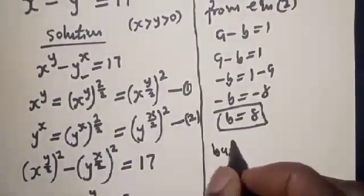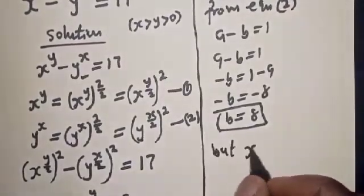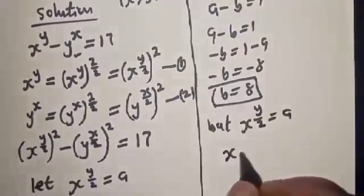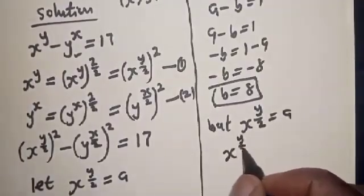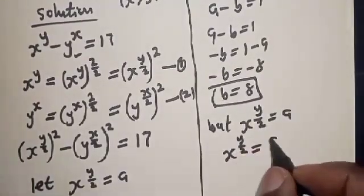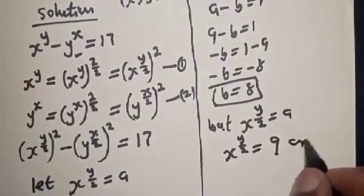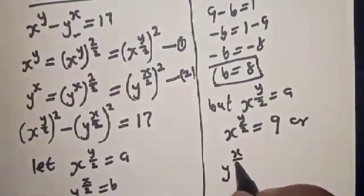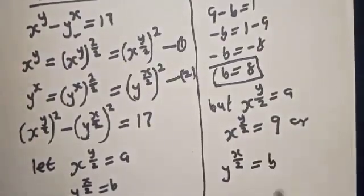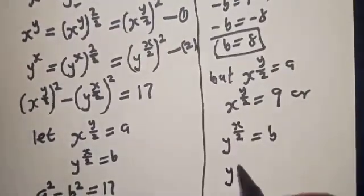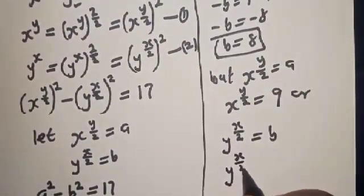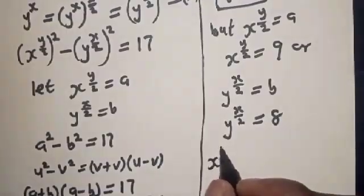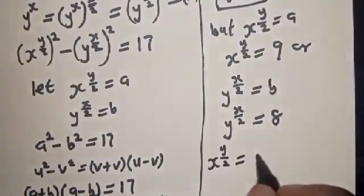Recalling our substitutions: s raised to power (y/2) equals a equals 9, and y raised to power (s/2) equals b equals 8. So s raised to power (y/2) is equal to 9, and y raised to power (s/2) is equal to 8.